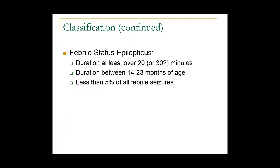Febrile status epilepticus has been getting a lot of attention over the past 10 years, thanks to the Febstat study. Different studies quote different numbers — the standard used to be 30 minutes, others looked at over 20 minutes. Over 20 to 30 minutes is generally determined to be febrile status epilepticus. It's typically seen between 14 to 23 months of age, and while very scary, it's less than 5% of all febrile seizures that wind up as febrile status epilepticus.